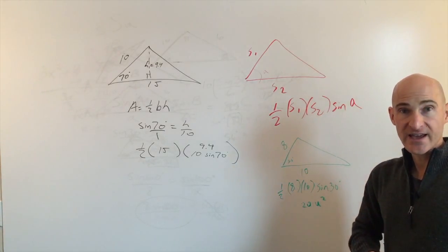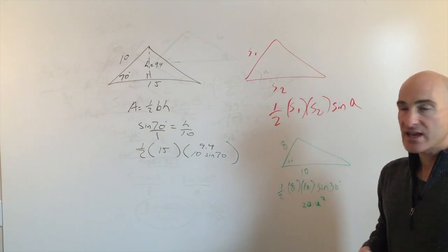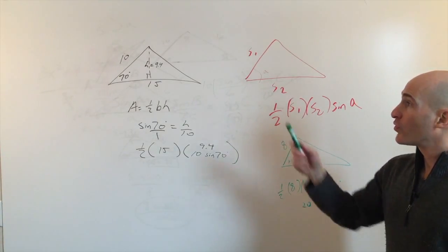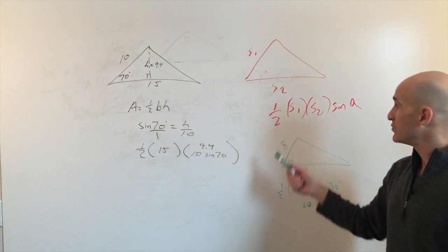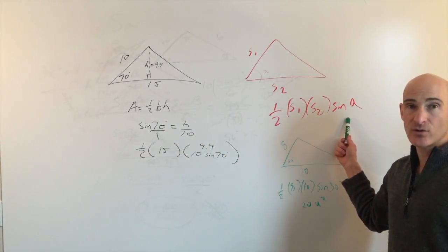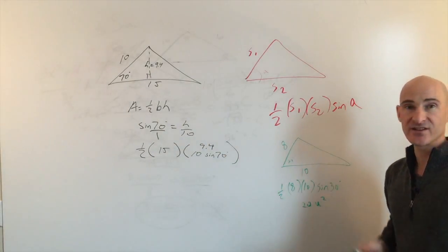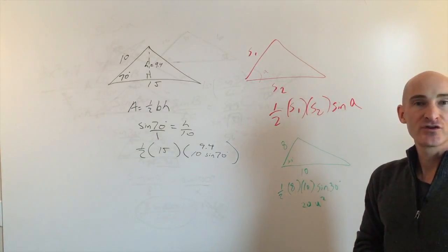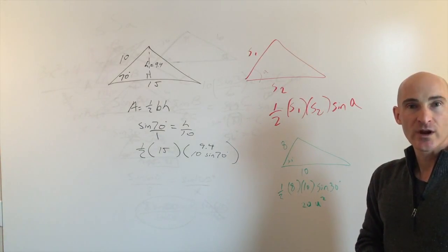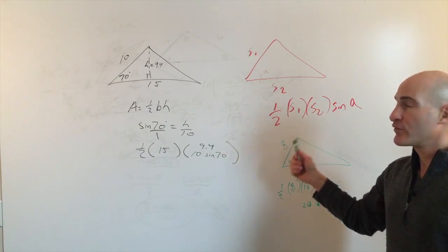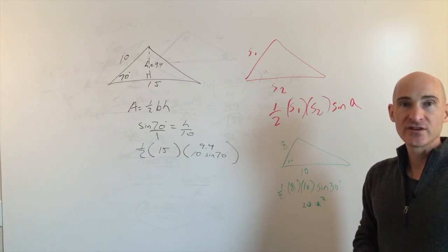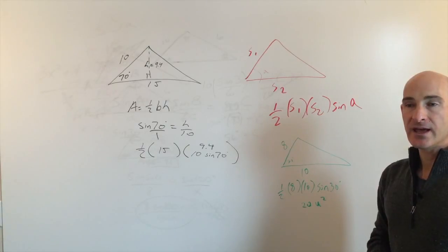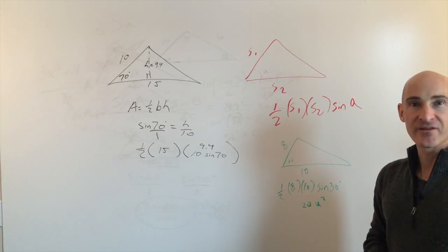So to summarize: the law of sines, the ambiguous case, and how to find the area of a triangle when you don't have the altitude — use one half times side 1 times side 2 times the sine of the included angle. Check out other videos, and feel free to review this one a second time.